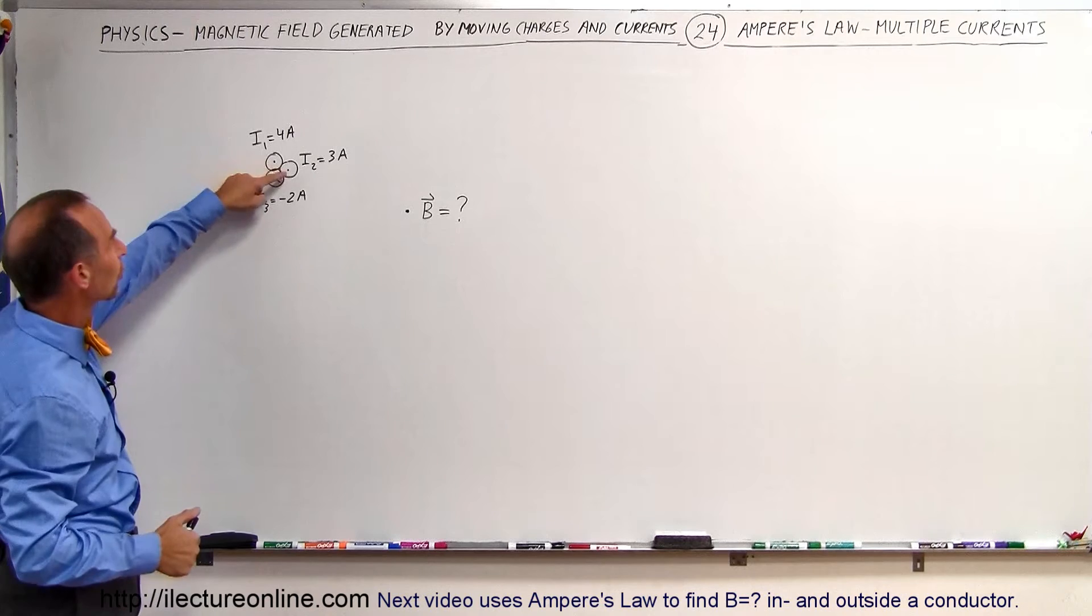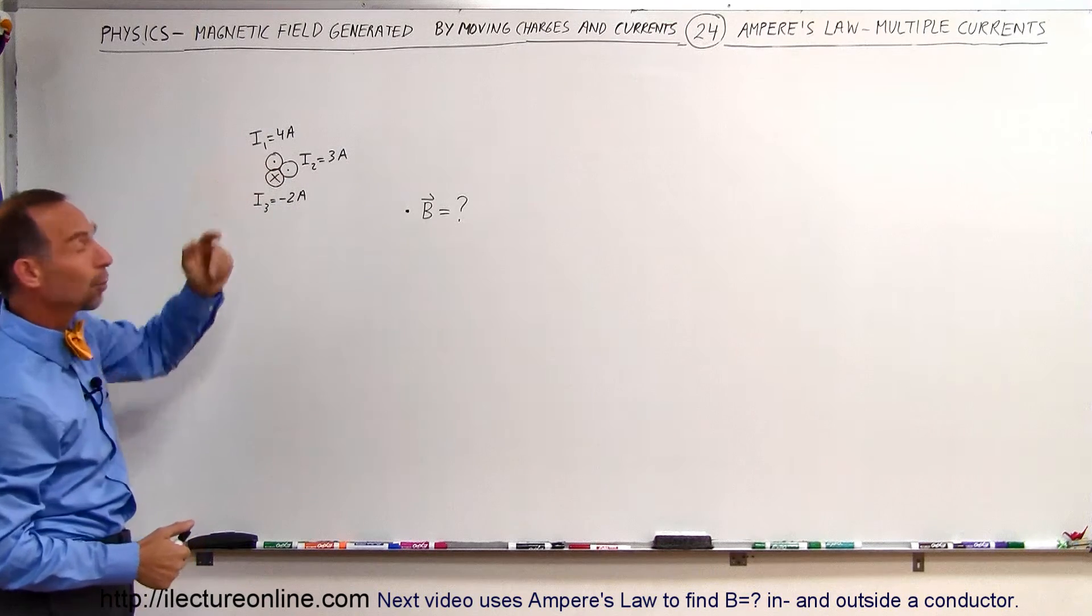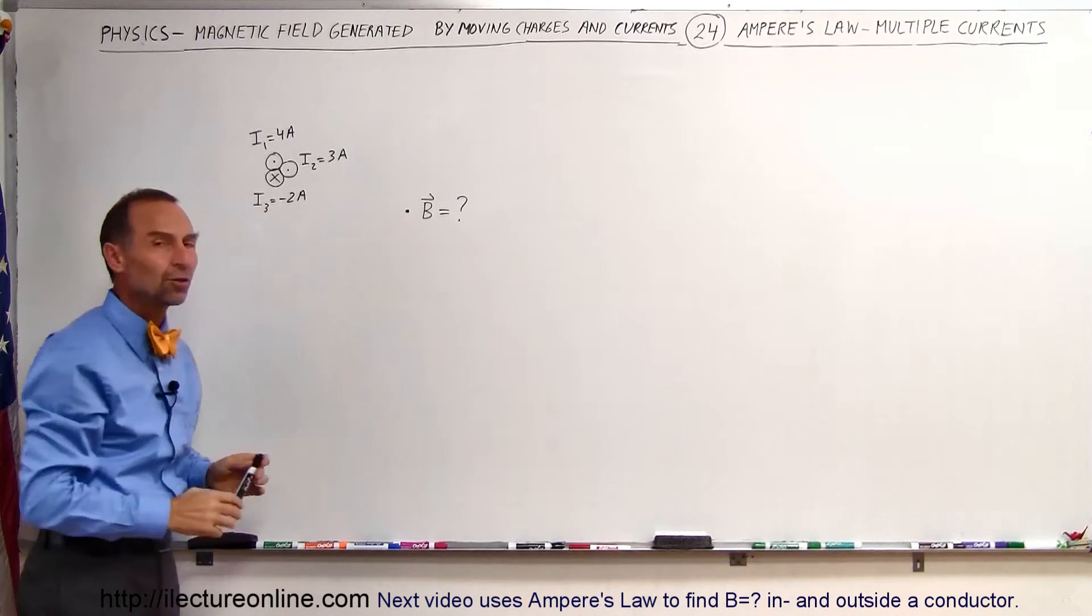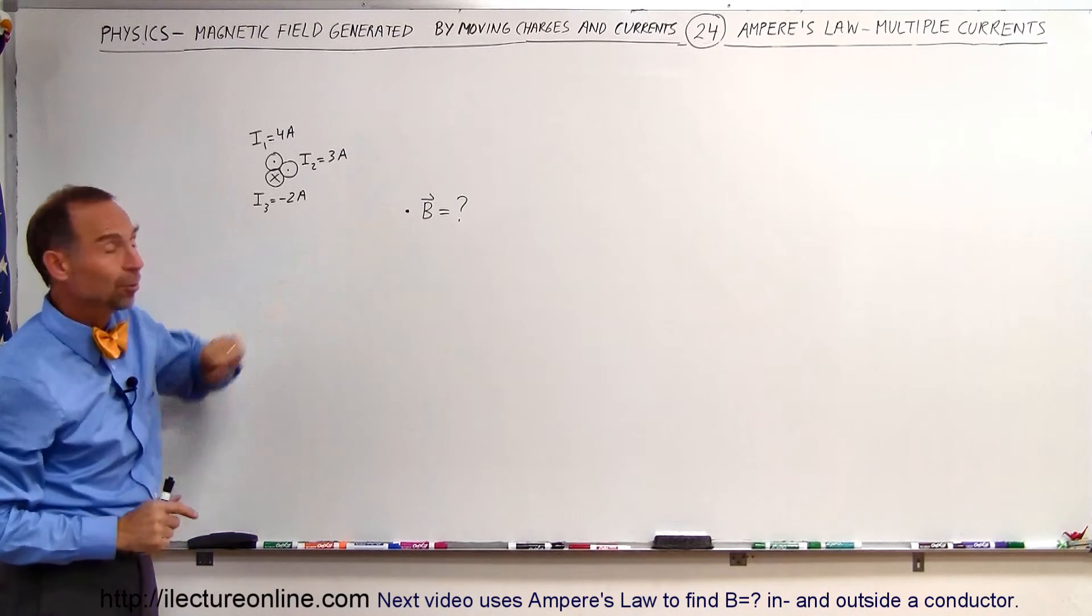Notice that two of the currents are in the direction out of the board. The third current is into the board. And we want to know what the strength and direction of the magnetic field is at this particular location.